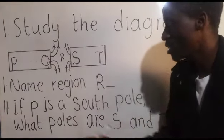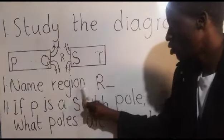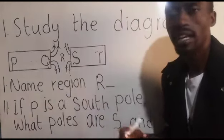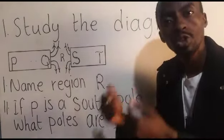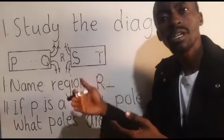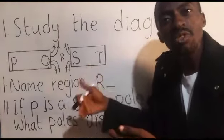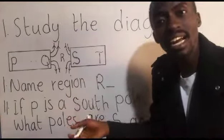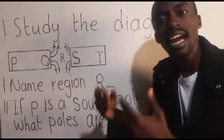Let's go to our question that says name region R. This region here. Now that region is what you call neutral point. Why neutral point? Because the magnetic field lines have neutralized each other. In simple terms, they have cancelled each other.